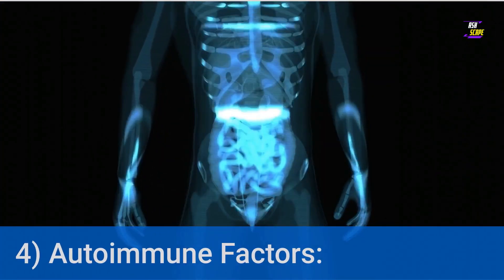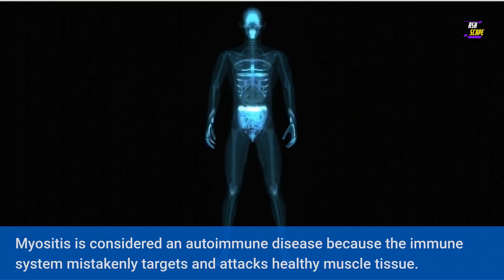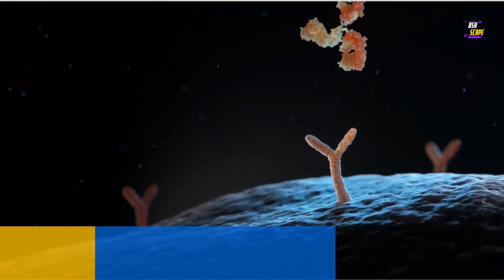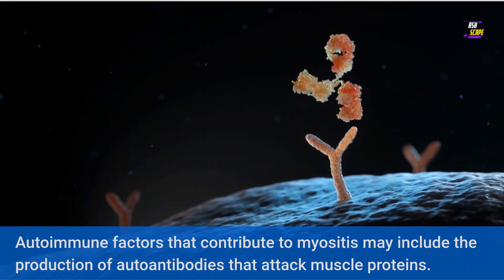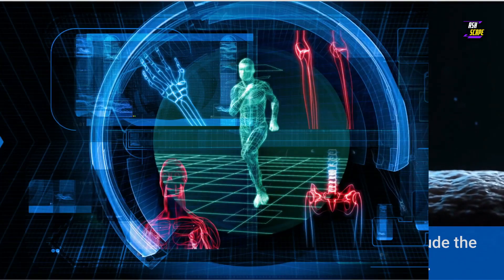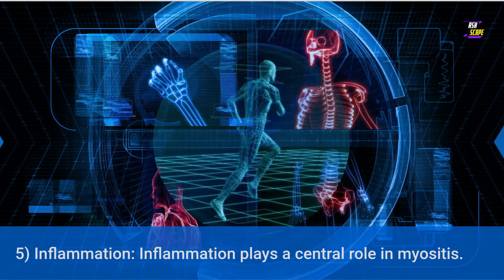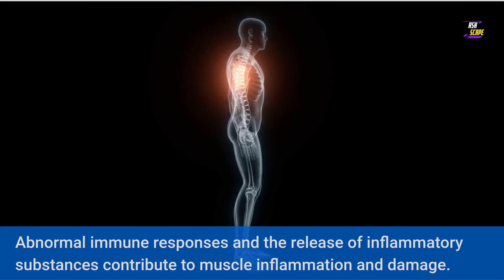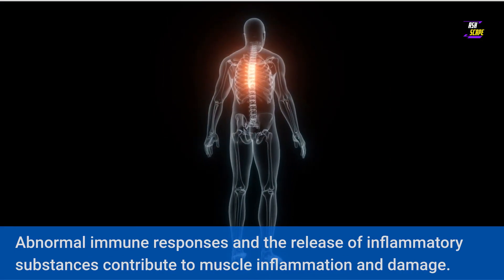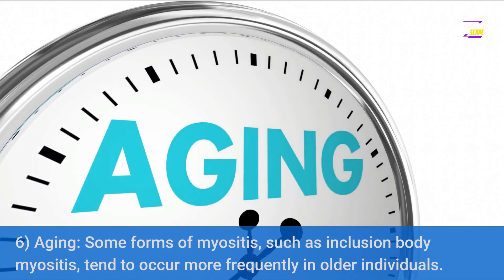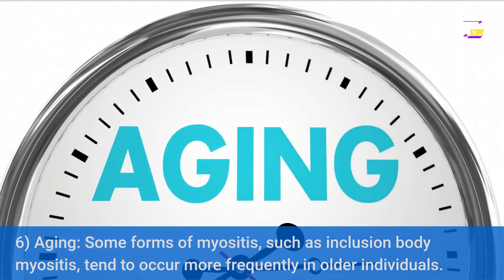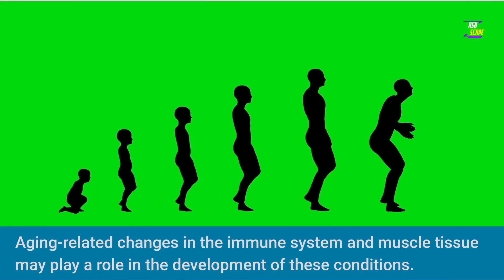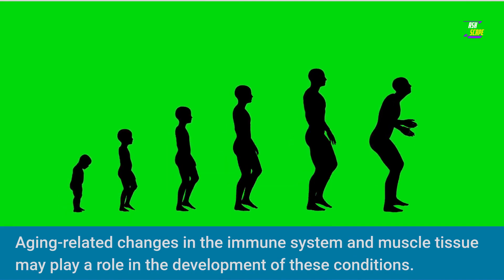4. Autoimmune Factors — myositis is considered an autoimmune disease because the immune system mistakenly targets and attacks healthy muscle tissue. This may include the production of autoantibodies that attack muscle proteins. 5. Inflammation — abnormal immune responses and the release of inflammatory substances contribute to muscle inflammation and damage. 6. Aging — some forms of myositis, such as inclusion body myositis, tend to occur more frequently in older individuals, as aging-related changes in the immune system and muscle tissue may play a role.